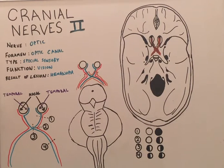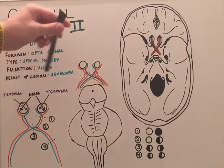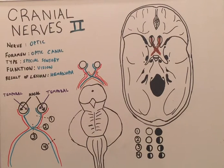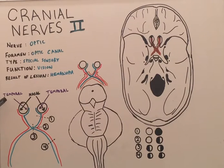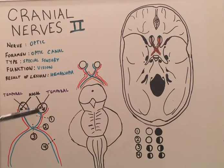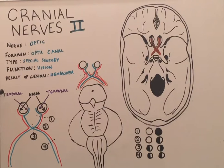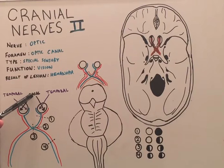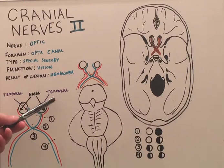Looking at this diagram, we can see our eyes and the two different fields from which each eye can receive light. We have light coming from both our nasal and temporal visual fields — nasal on the medial aspects and temporal on the lateral aspects. However, on the retina of each eye respectively, the temporal visual field stimulates the medial portion of the retinas, whereas the nasal visual field stimulates the lateral or temporal portion of each eye.